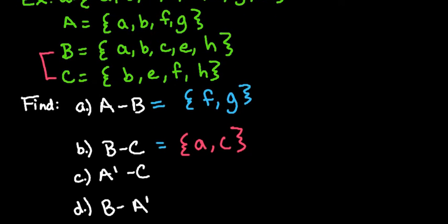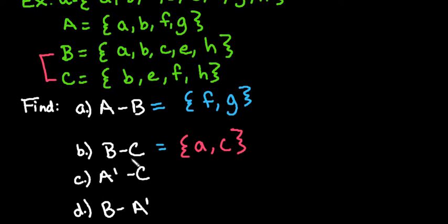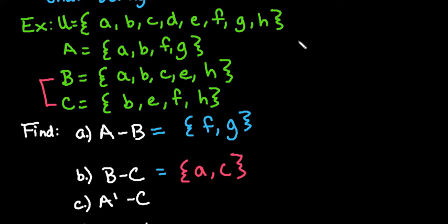All right, for the next one, we have A naught. Remember that this is the complement of A. We're looking for all letters that are in the universal set that are not in A. So we want to first find A naught before we can simplify this.